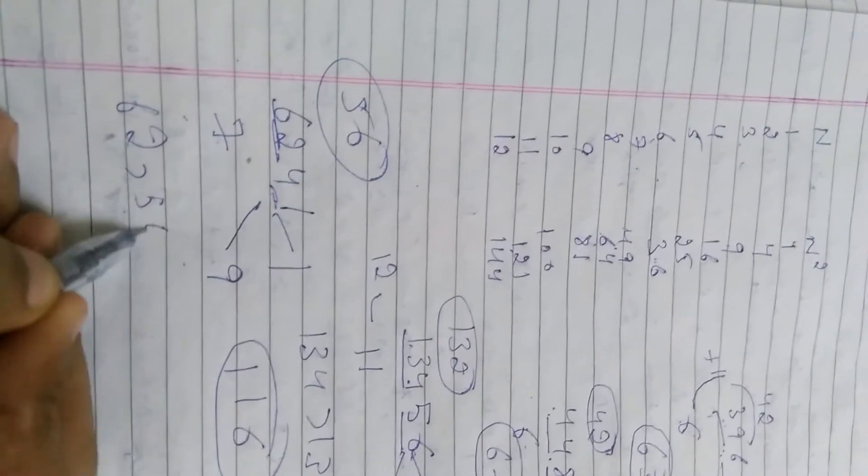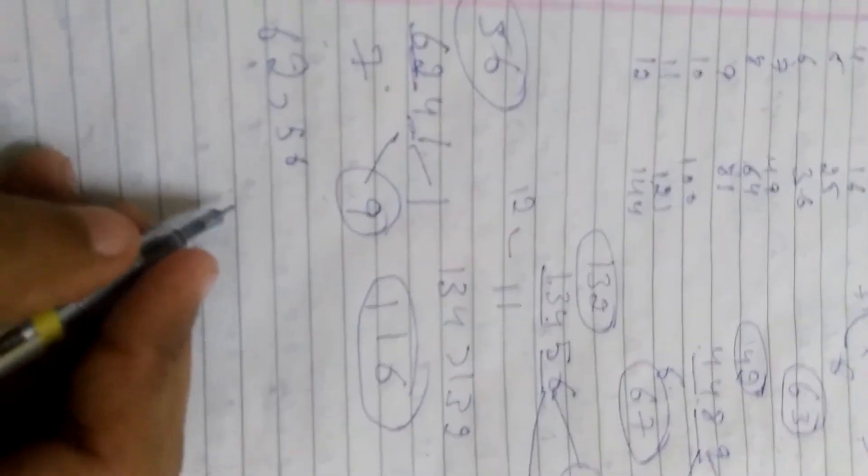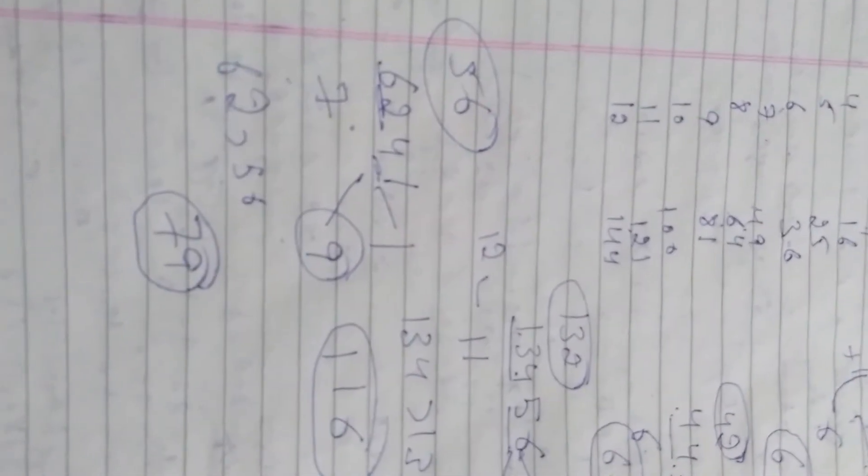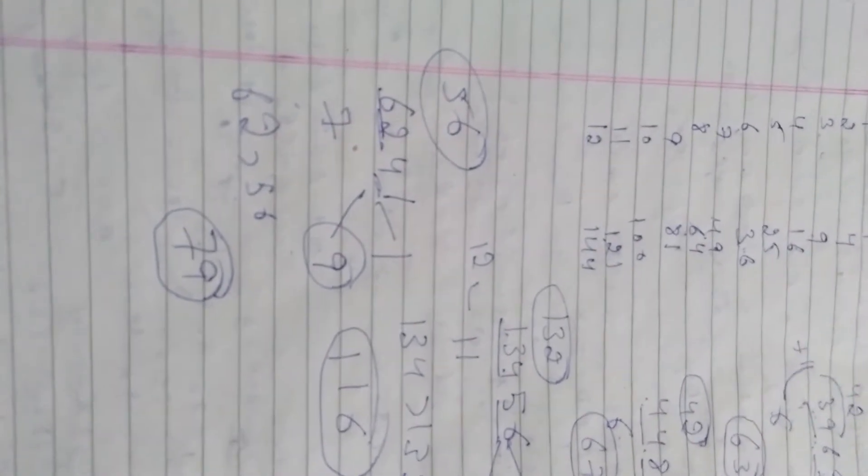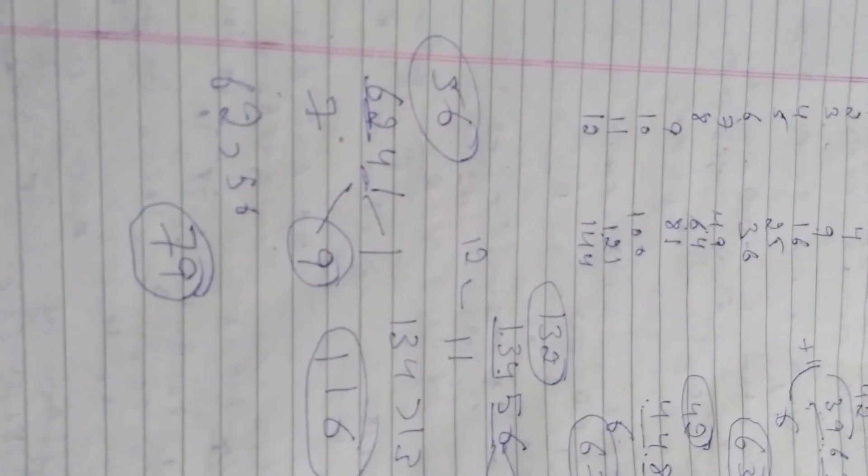62 is greater than 56, so we take the number 9. The answer is 79. I hope guys I was able to help you understand how to find the square root of a perfect number within seconds.